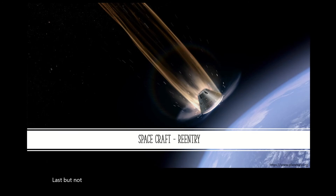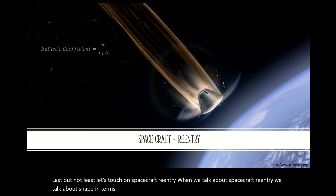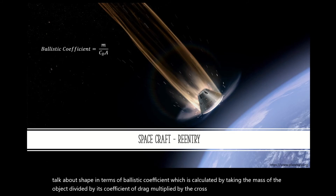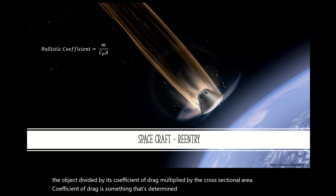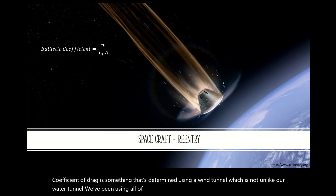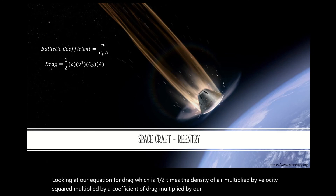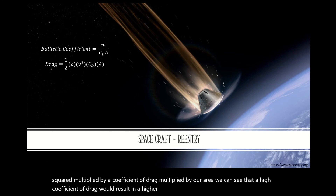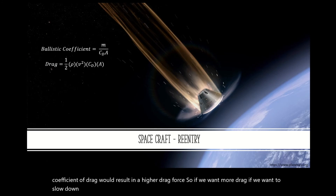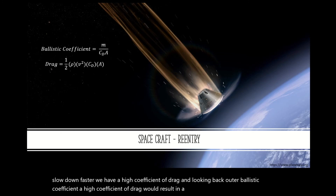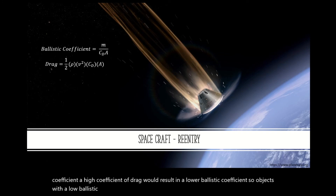Last but not least, let's touch on spacecraft re-entry. When we talk about spacecraft re-entry, we talk about shape in terms of ballistic coefficient, which is calculated by taking the mass of the object divided by its coefficient of drag multiplied by the cross-sectional area. The coefficient of drag is something that's determined using a wind tunnel, which is not unlike our water tunnel we've been using on all of these examples. Looking at our drag equation — one-half times the density of air multiplied by velocity squared, multiplied by the coefficient of drag, multiplied by area — we can see that a high coefficient of drag would result in a higher drag force. So if we want more drag and want to slow down faster, we have a high coefficient of drag, which would result in a lower ballistic coefficient. Objects with a low ballistic coefficient would experience more drag and slow down faster.